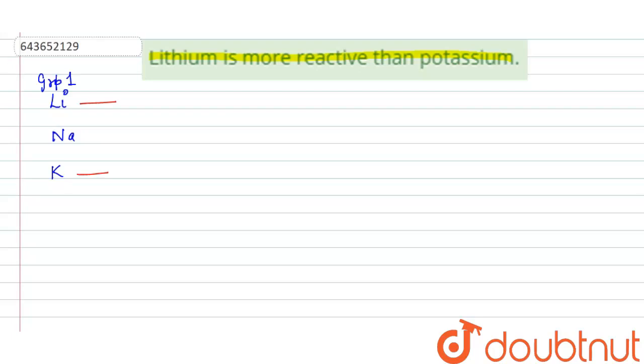First of all we'll see the atomic number. So lithium has an atomic number of three and the electron distribution will be two, one. Also for potassium, the atomic number is 19. So the electronic configuration will be two, eight, eight, and one.